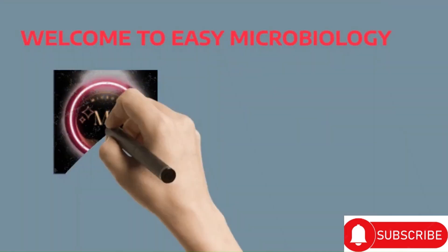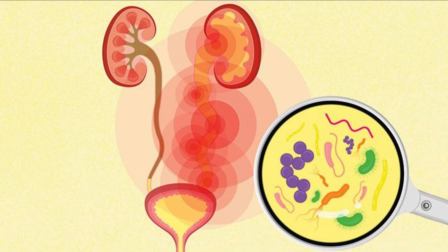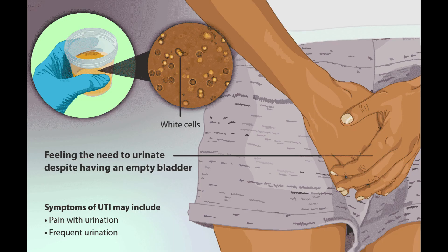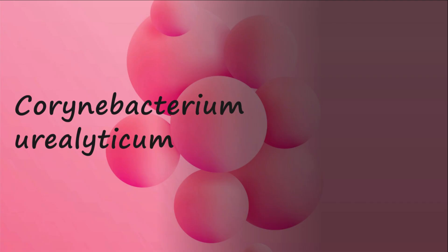Welcome to Easy Microbiology. Good morning everyone. Today we will be discussing Coronybacterium ureoliticum, a gram-positive bacterium commonly found in the urogenital tract of humans. We will explore its habitat, morphological features, biochemical characteristics, host range, virulence factors, mechanisms of antibiotic resistance, and more. Let's take a closer look and begin.